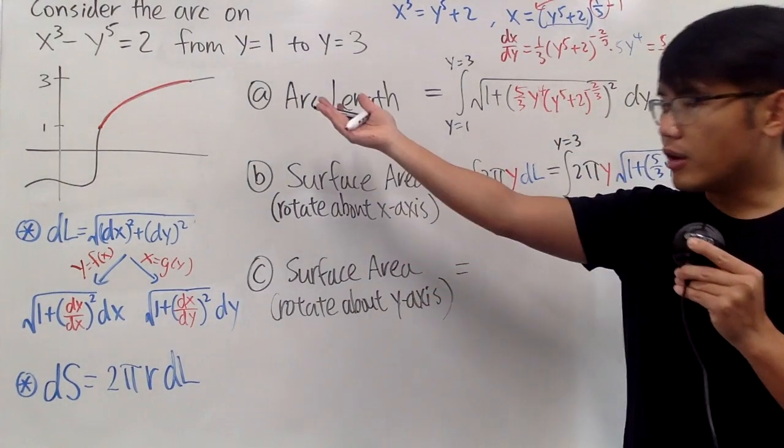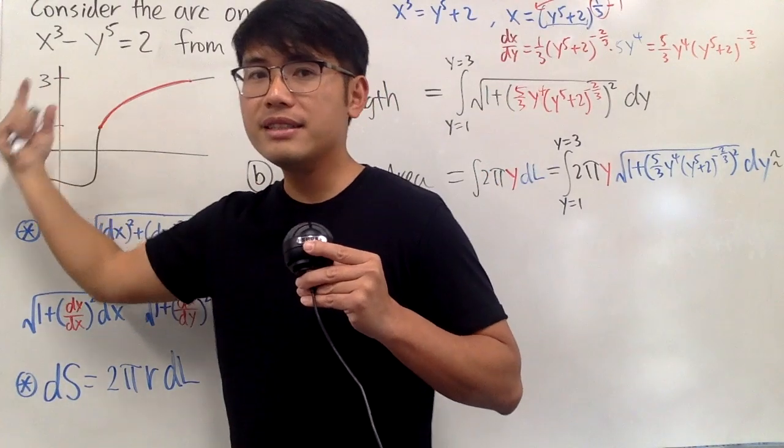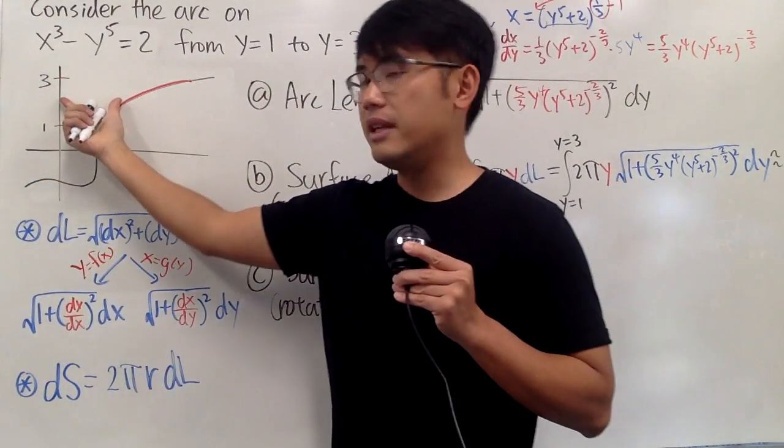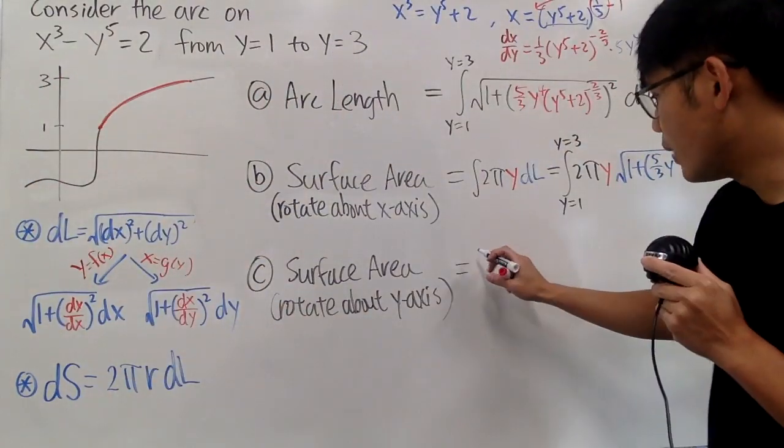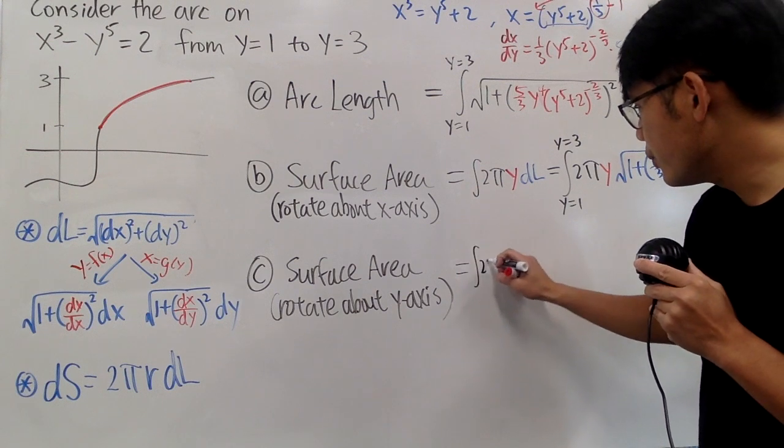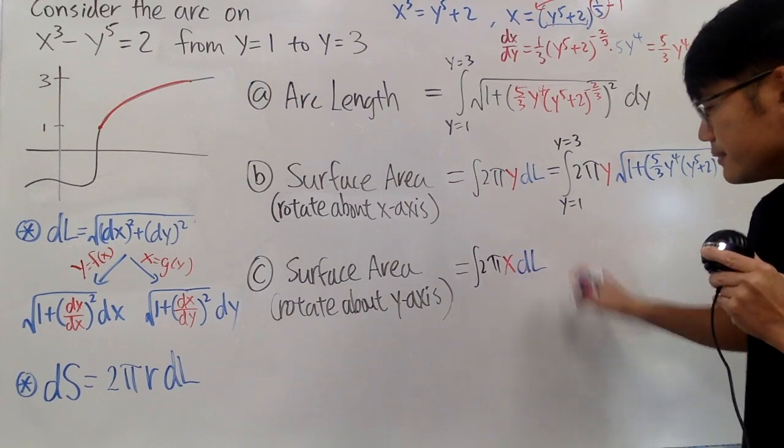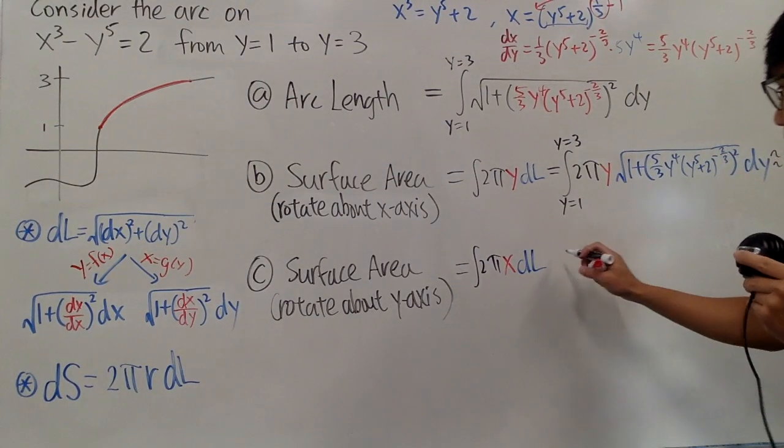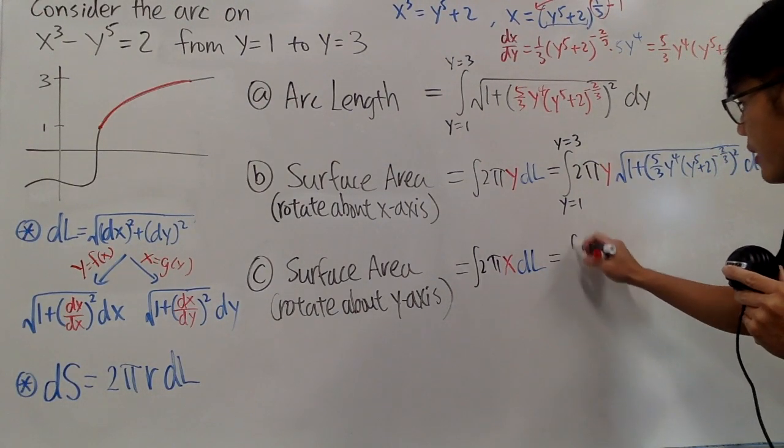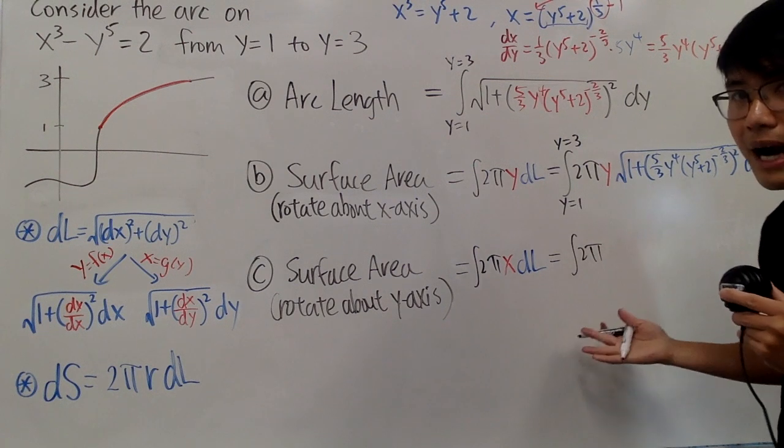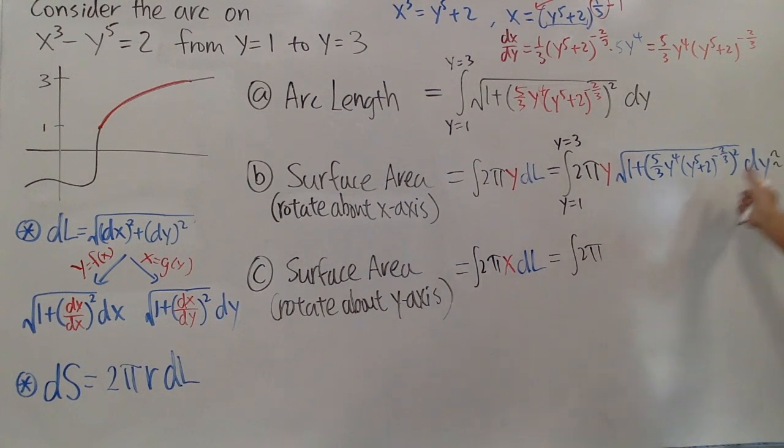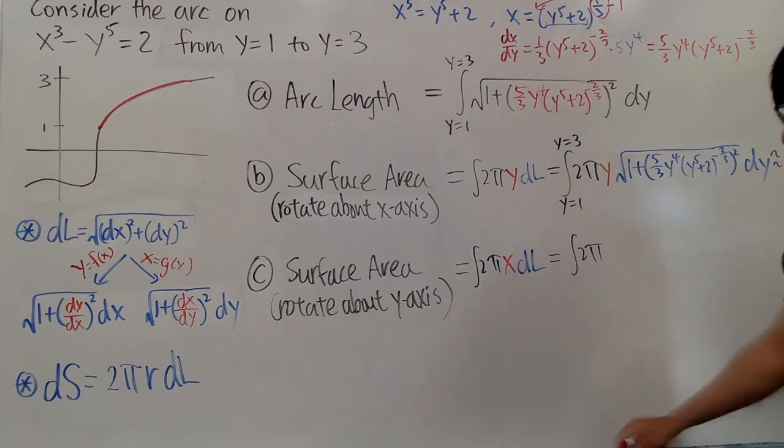Now, the surface area, when you take the arc, rotate about the y-axis. In that case, the radius will be the x value. So we will have the integral 2 pi x. And again, multiply by the dL. And then we will, of course, just do the same thing pretty much. So we have the integral 2 pi is still 2 pi. DL is still all that, so I will have to write that down again.